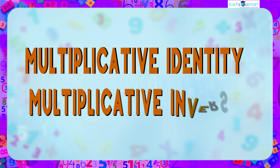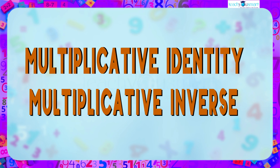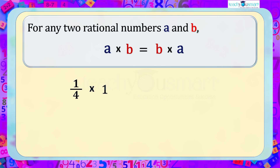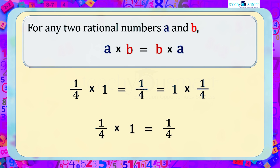We know for any two rational numbers a and b, a multiplied by b equals b multiplied by a. For example, 1/4 multiplied by 1 equals 1/4, and 1 multiplied by 1/4 also equals 1/4. Here, 1/4 and 1 are elements in the set of rational numbers, and when we multiply 1/4 with 1 we get the same number itself.